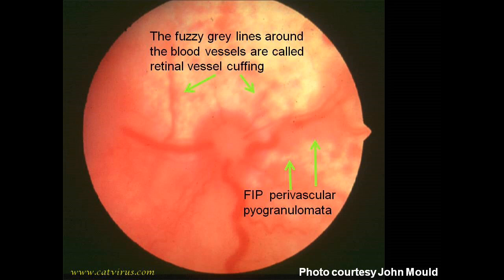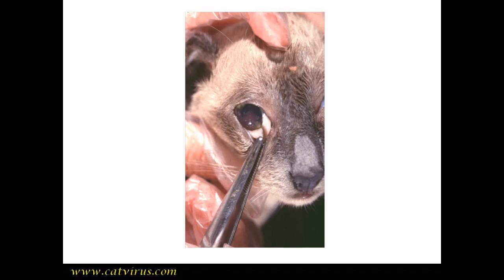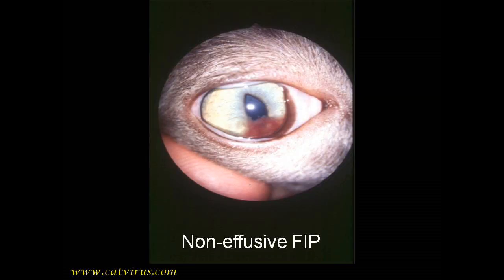I will put a link in the show notes to my animation of the pathogenesis of FIP, and also a link to Dr John Mould's website in case you are in the UK and wish to refer an ophthalmology case to him. This is a cat immediately after euthanasia for FIP — I'm showing you this to illustrate that the keratic precipitates were mostly hidden by the third eyelid, and while he was alive I had to get him to look up to see they were present. In this cat there are red blood cells in the anterior chamber, which would make you want to check the cat's blood pressure and urine specific gravity, since intraocular haemorrhage is more commonly associated with raised blood pressure, although the posterior chamber is more often involved than the anterior chamber.